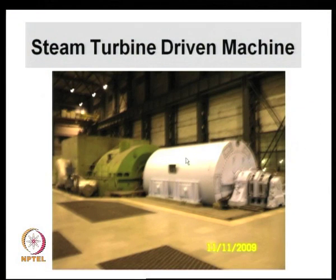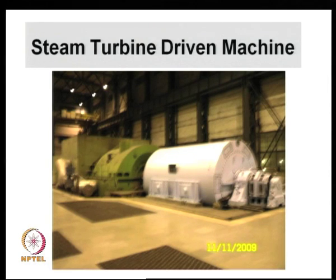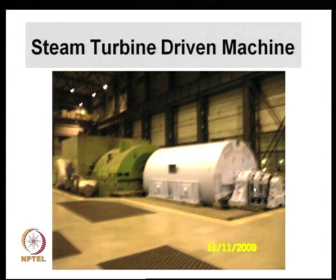It will be instructive to first look at how a practical synchronous machine looks like. What I will show you right now is a steam turbine driven generator of around 210 megawatts. What you see in white is the synchronous machine; in green are the various stages of the steam turbine. On the side are the bearings, and at the end are the slip rings and brushes which convey the excitation voltage to the field winding rotating in this synchronous generator.